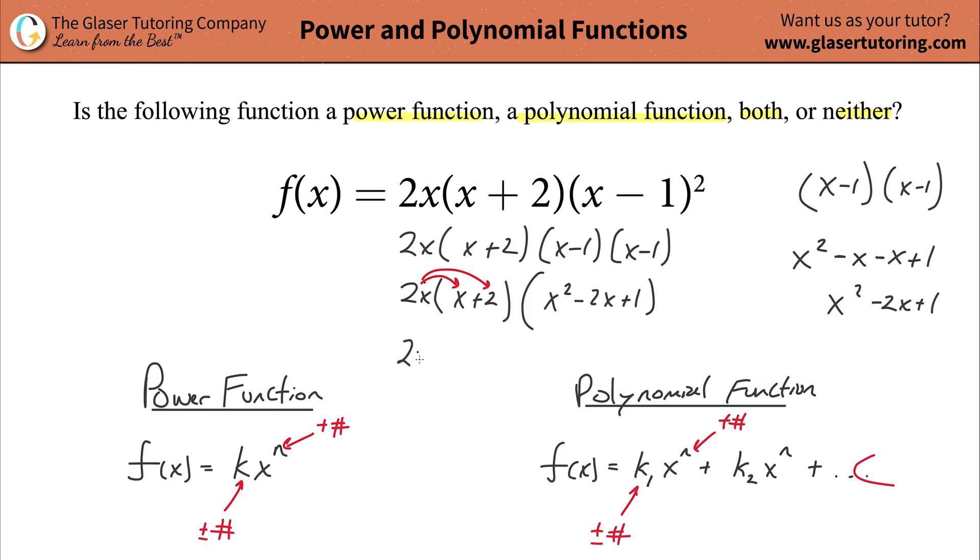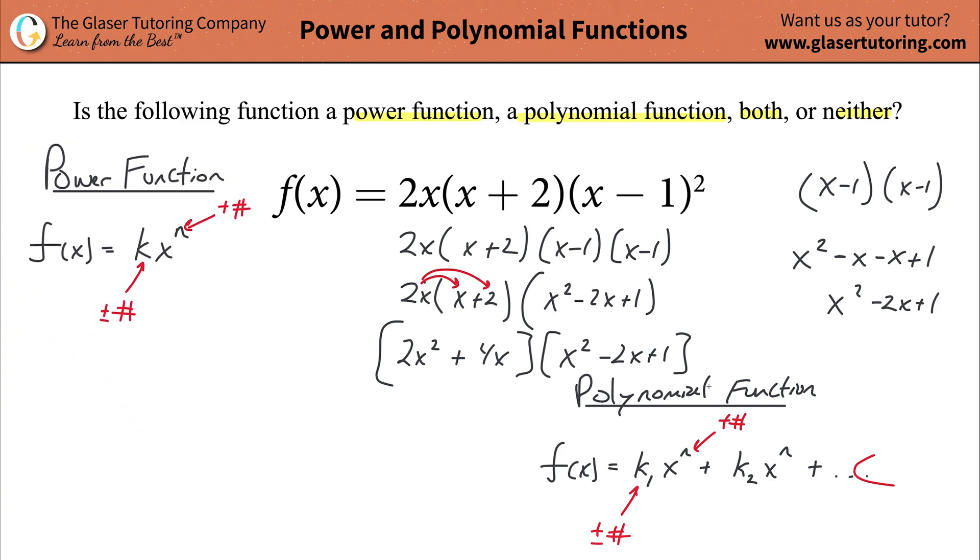So that's going to get me now 2x squared plus then 4x. And this whole thing is then still multiplied by this whole thing, x squared minus 2x plus 1. And now to, why don't I just kind of move this on over to the left-hand side, give us a little more space.